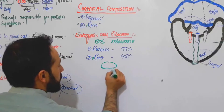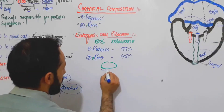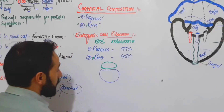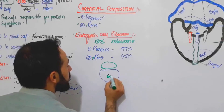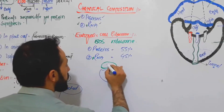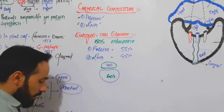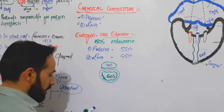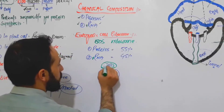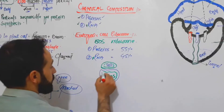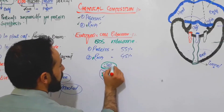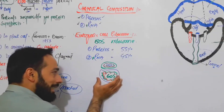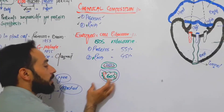The 80S ribosome also contains two subunits: the large subunit and the small subunit. The large subunit is 60S and the small subunit is 40S. Inside both the 60S and the 40S subunits there are proteins and RNA.